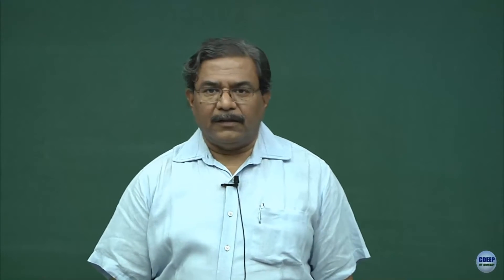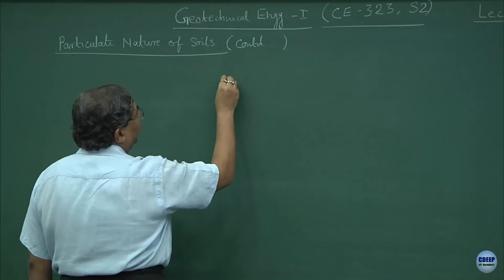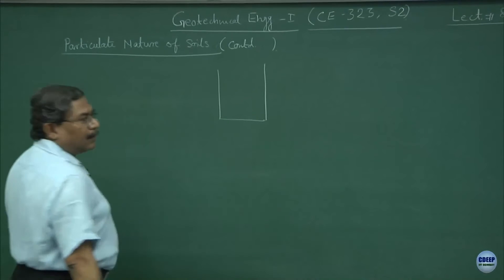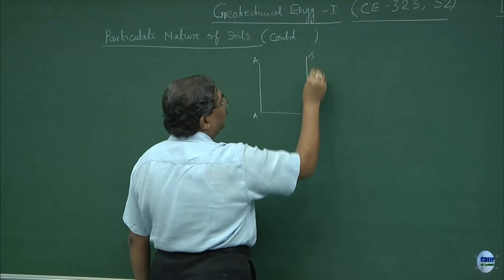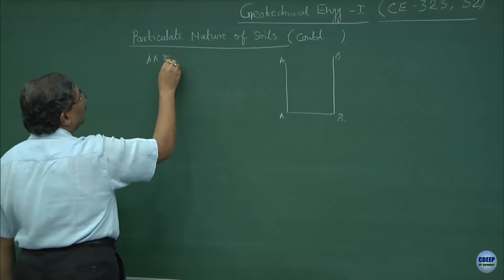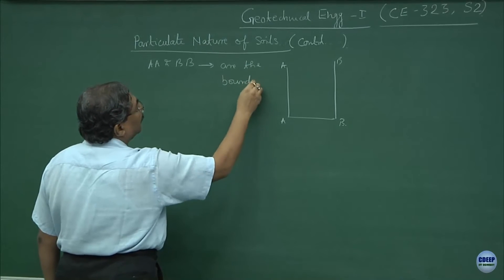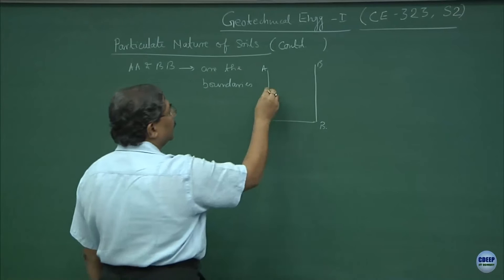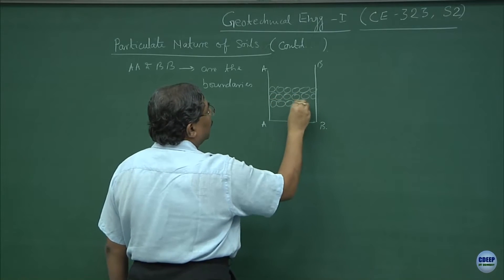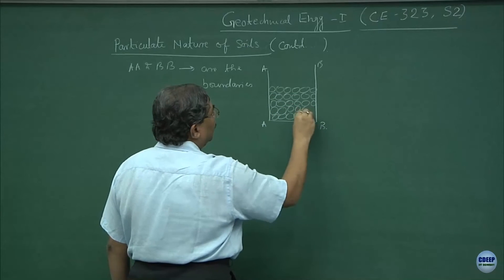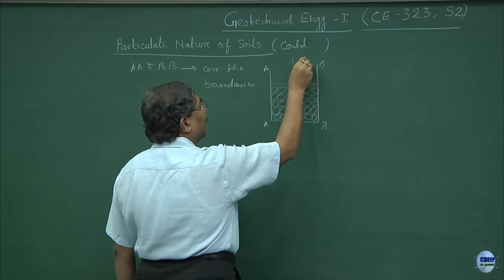I was talking about a control volume confined in such a manner that the boundaries are rigid. AA and BB are the boundaries confining the material — for simplicity I am assuming granular material — and I had talked about the micro mechanics of the system. There is a piston through which I am applying the normal stress sigma.